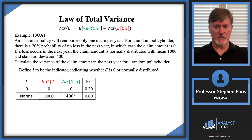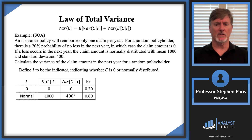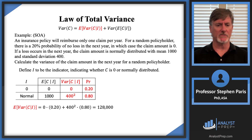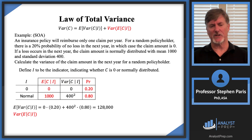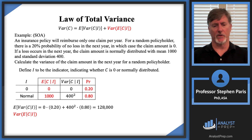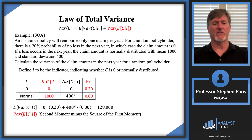Now I just follow the law of total variance. For the first term, I take the expected value of the variance of cap C given cap I. The variance of cap C given cap I is a discrete random variable shown in the table, and I'm taking its expected value — that's just a sum-product. I get 128,000 when I do that calculation.